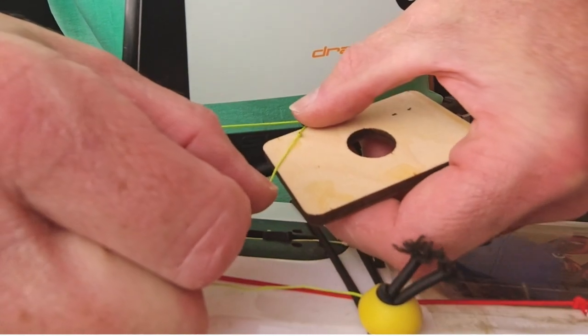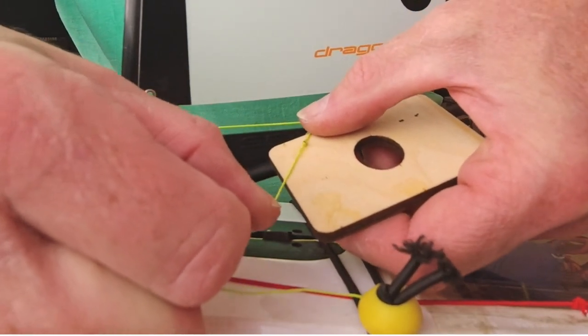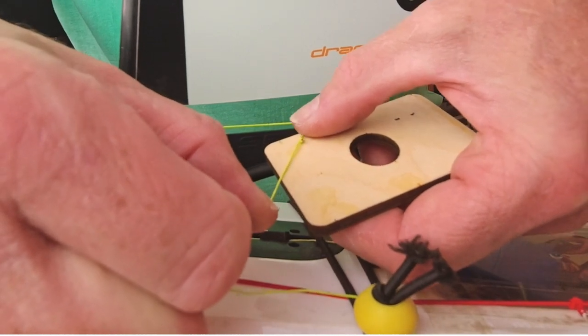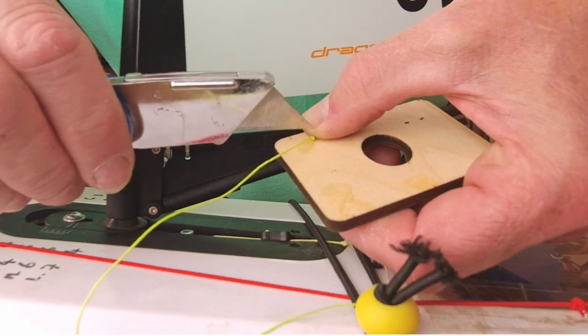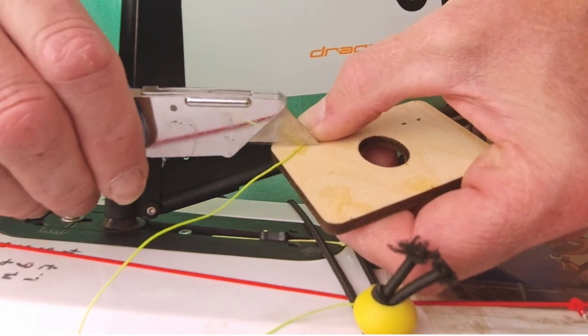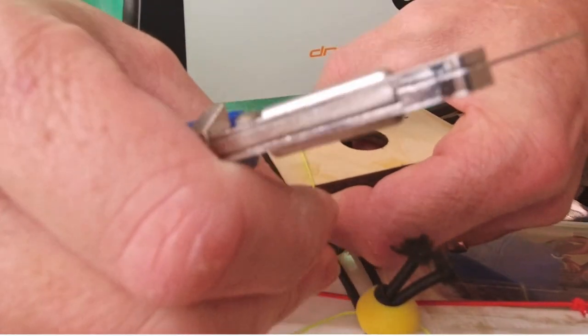Trim the loose ends of dyneema by putting a dab of super glue where you want the cut to be. Then use a sharp blade to make the cut. The super glue will prevent the dyneema from fraying.